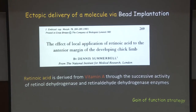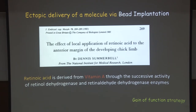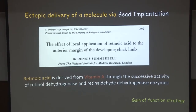Going back in history, one technique possible in chick because of its large size is bead implantation — not possible in other animals. You take a small microscopic bead of a few microns and soak it in the solution of a protein or chemical that inhibits or activates a particular gene function. Because the embryo is so accessible, you can surgically implant that bead wherever you want. It will release that compound, affect the surrounding cells, and you can see the effect.